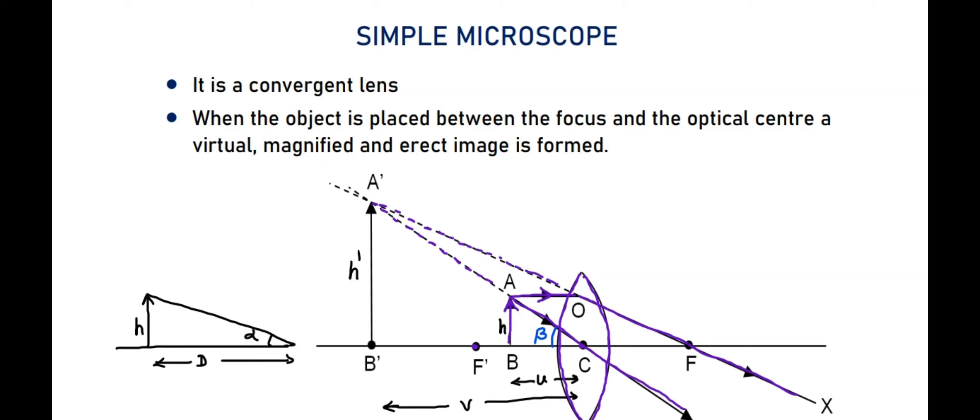That means the image is formed here of height h dash. Now, the angle done by the image at the eye of the observer when seeing through the instrument is beta.